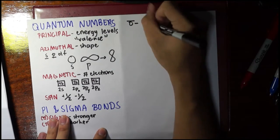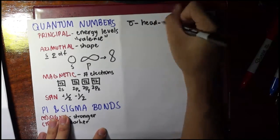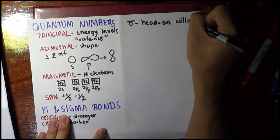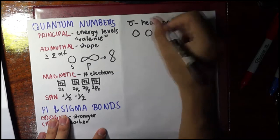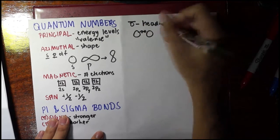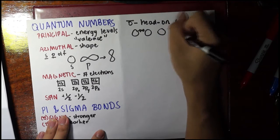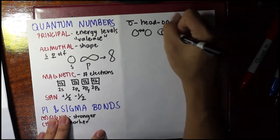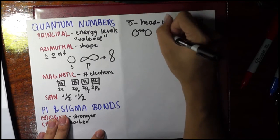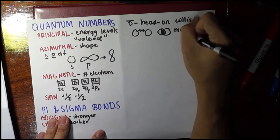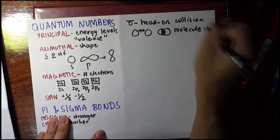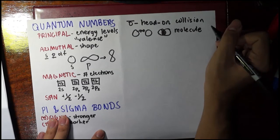We say that for sigma, we have a head-on collision, and it would look something like this. If you have two s orbitals, they would collide head to head—that's why it's head-on—to form this molecular orbital.